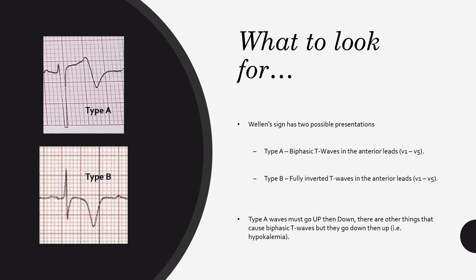So what are we looking for specifically? There are two types: Type A and Type B. Type A is that classic straightened ST segment biphasic T wave that goes up and then down. There are other clinical presentations that create a biphasic T wave, but they typically create T waves that go down and then up. For example, hypokalemia causes low rolling biphasic T waves that are classically down and then up — the up part is often called a U wave, which is classic for hypokalemia. So in Wellens sign, it's going to go up and then down, or have complete inversion.